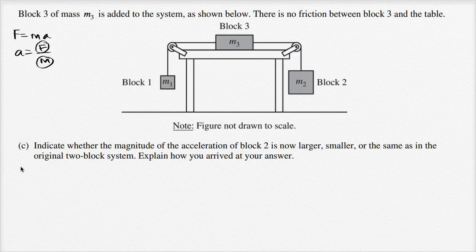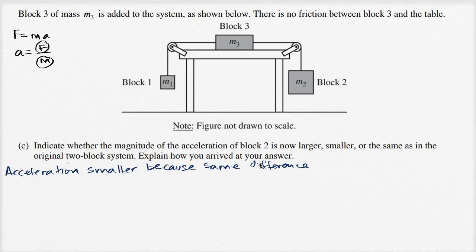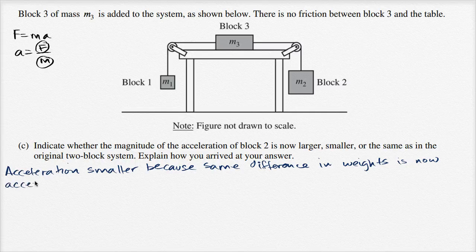So what you could write is: acceleration is smaller, because the same difference in weights between m1 and m2 is now accelerating more mass. And that's the intuitive explanation for it.